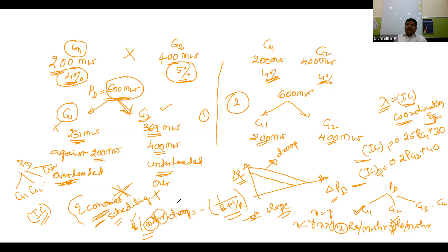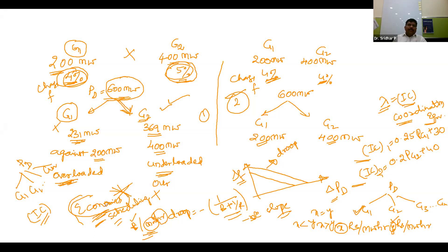In Module 1, load is distributed based on economics (rupees/MWh) without considering frequency. In Module 2, load is distributed based on frequency changes and droop characteristics, without considering economics. The question is: is it correct to always ignore economics in Module 2, or ignore frequency in Module 1?